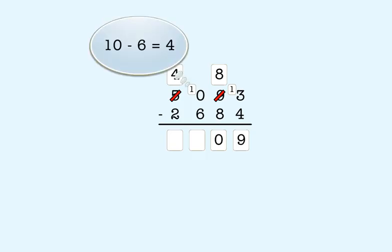In the thousands column, four minus two is equal to two. So 5093 minus 2684 is equal to 2,409.